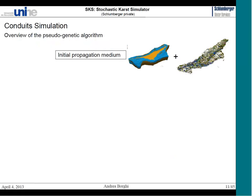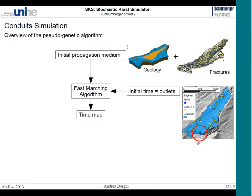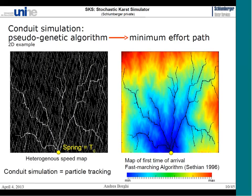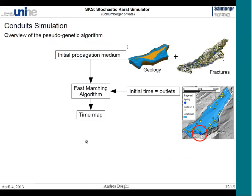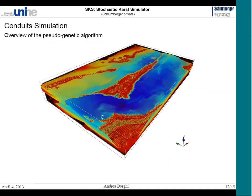In 3D, looking at the overview of the whole algorithm: we first use a geological model, then add heterogeneity with a fracture model — in this case a DFN. We then go to the field and map all the inlets and outlets of the system. We use the outlet — the spring coordinates — as the initial time for the fast marching algorithm, and compute the time map also in 3D. For this Noireg model example, you can see the spring and the preferential zones highlighted in blue.